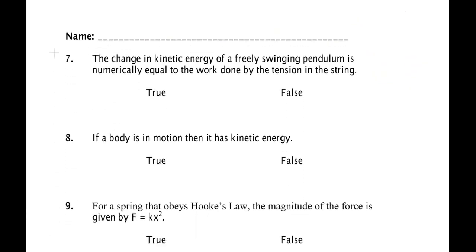Seven. The change in kinetic energy of a freely swinging pendulum is numerically equal to the work done by the tension of the spring. No. That's not true because the tension does no work. There's the ball. The tension is in this direction, for instance. The displacement is perpendicular to that. W by the tension is zero. The work is due to gravity. This force. It's what's making this pendulum speed up and slow down. Not the string. The string is a centripetal force. It's just changing the direction. So this is false.